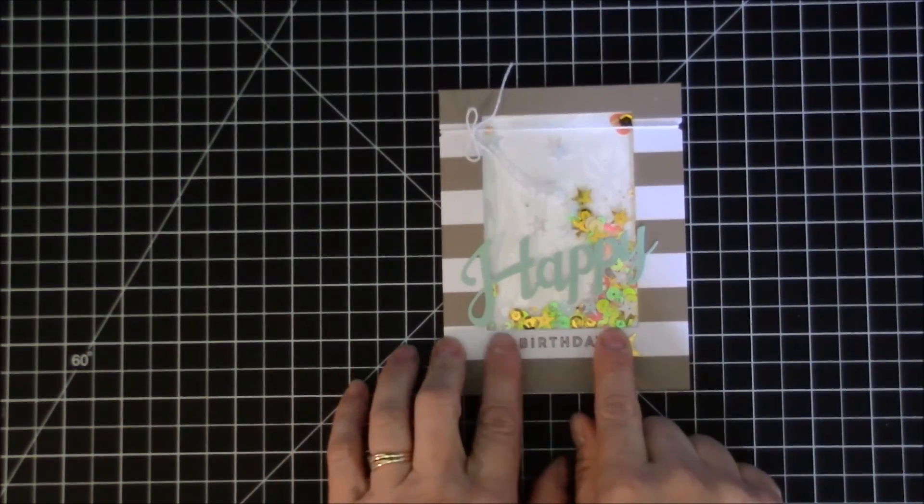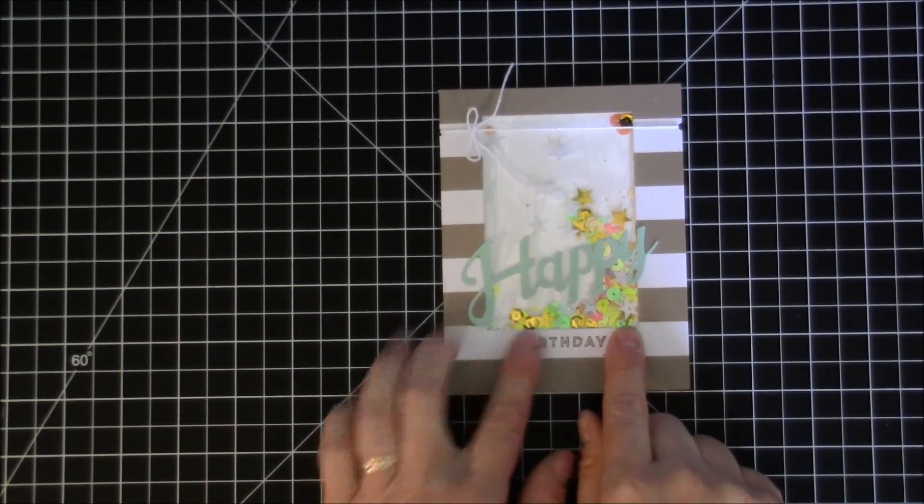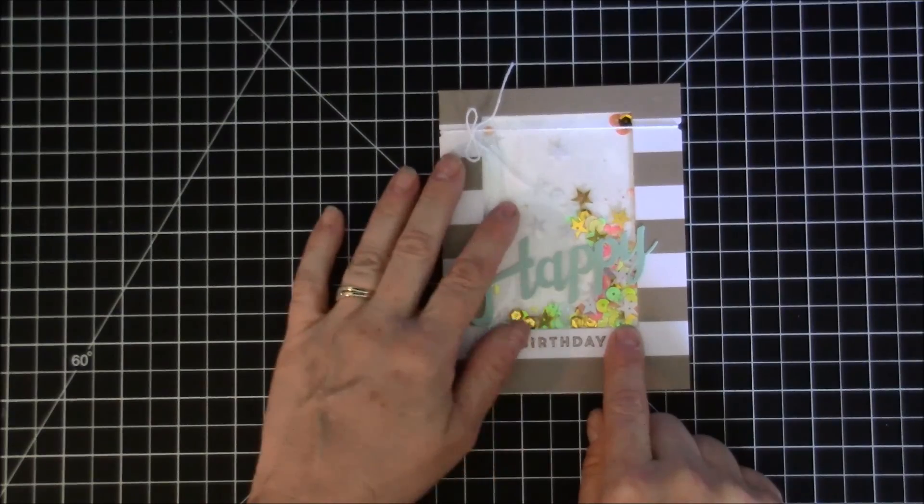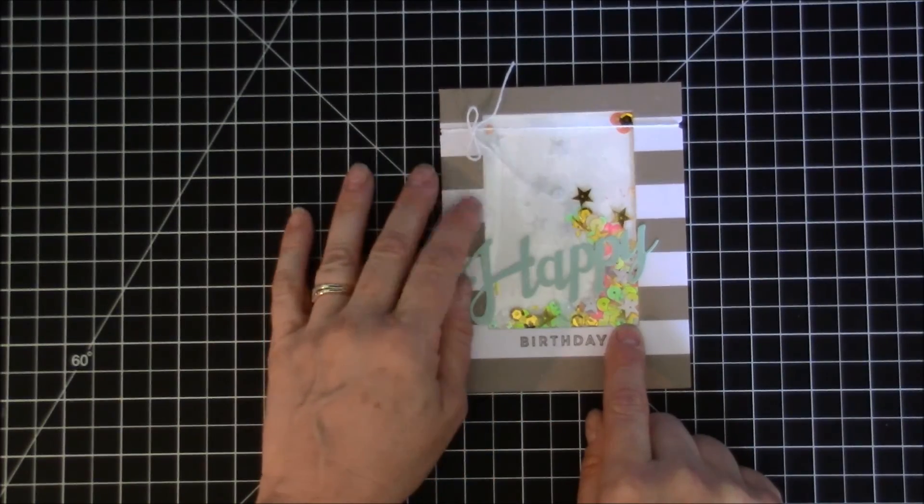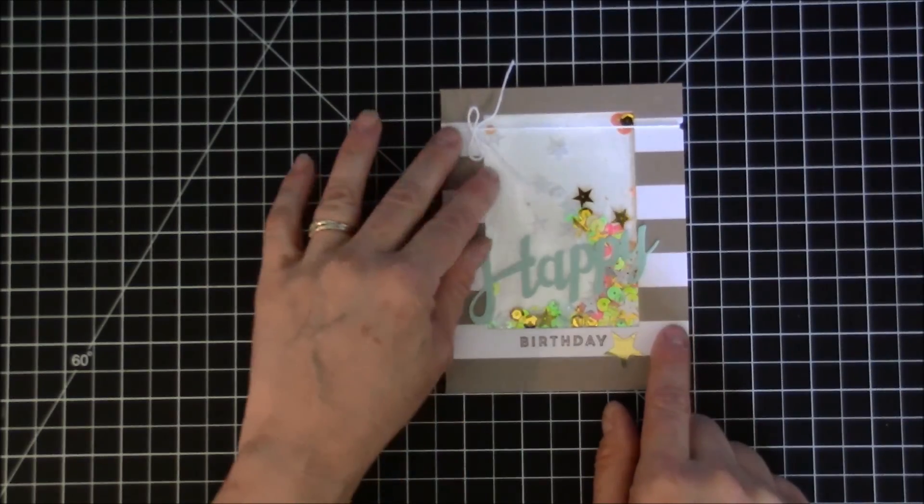The first one is this one where I just used a rectangle die to make the window. I had one piece of acetate left in my stash so I made the traditional shaker card where you attach the acetate to the opening.